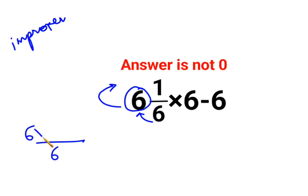which is 6. So 6 multiplied by 6 and you add the numerator, which is 1. And you continue to write the rest of the question as it is.